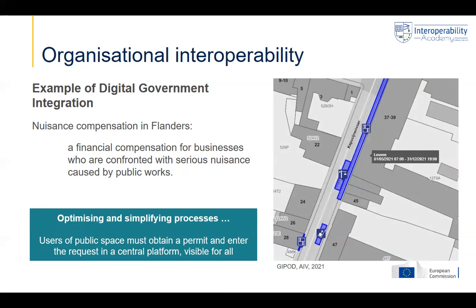For example, on the map shown here, a crane is put to do some works in the city, which might block one of the shops. Also, a rack is put to do works on the front of certain buildings. It can also be a moving elevator for people relocating — very temporary — while other public works can take months. Instead of having separate solutions, they have combined them in one workflow, simplifying the permit process on the one hand, but also generating the compensation in a semi-automatic way. This is an example of how organizational interoperability requires good collaboration and streamlining of processes.